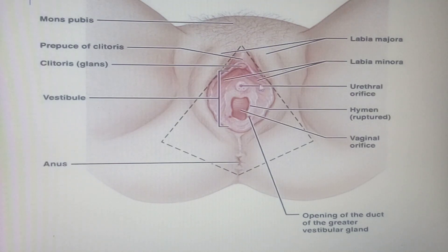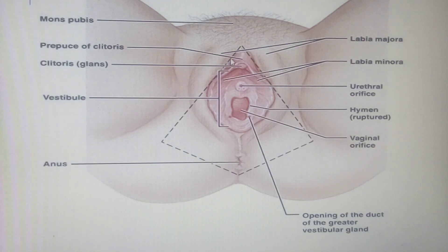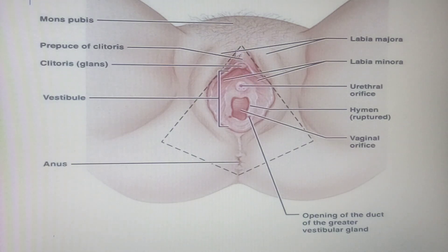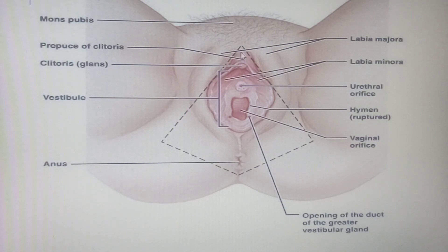The labia minora is also devoid of sweat glands, though there could occasionally be some sebaceous glands. Anteriorly, the labia minora is related to the clitoris. This clitoris that we find here is actually just the tip of the iceberg — we will get to know its full extent shortly.